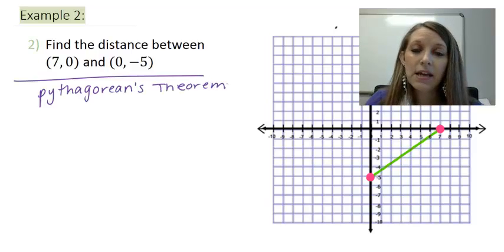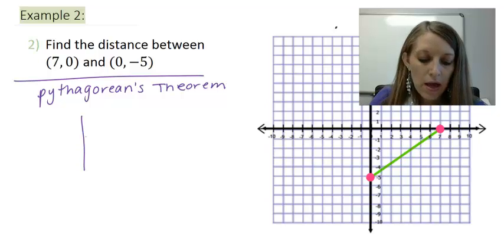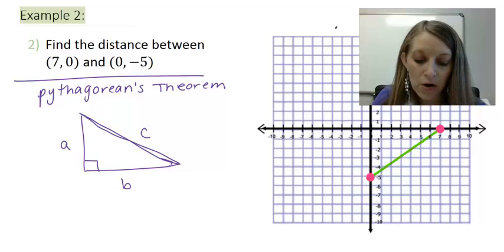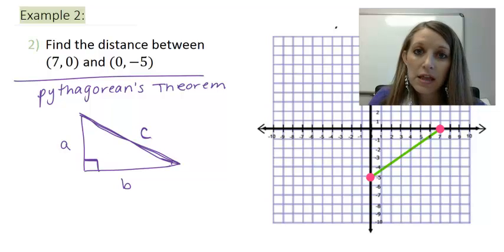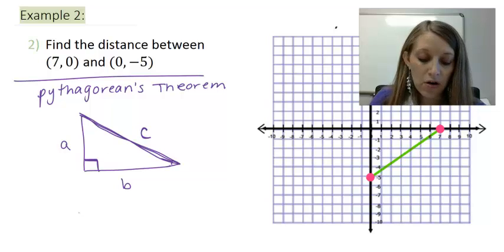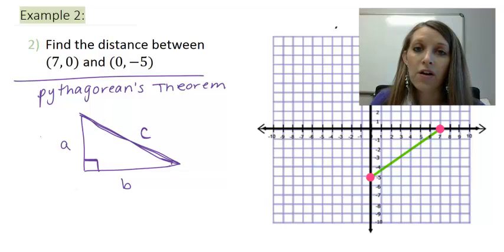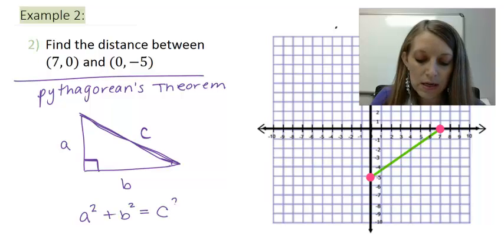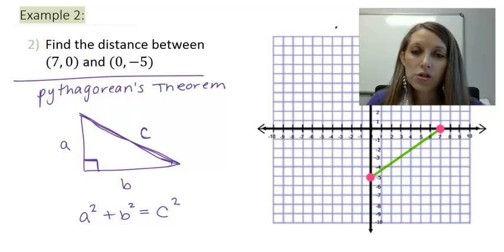Pythagorean's Theorem says, if you have a right triangle, meaning a triangle that has a right or a 90 degree angle, and you have each of your sides labeled where the long side or the hypotenuse opposite of your right angle is labeled C, then you can figure out the distance of the third side from the other two. And, the formula is A² + B² = C².